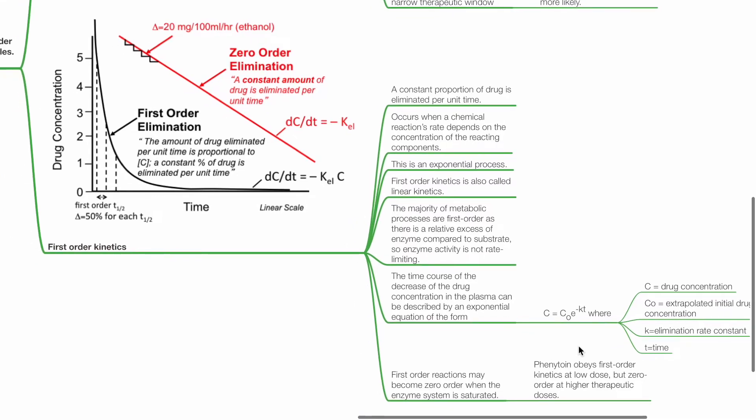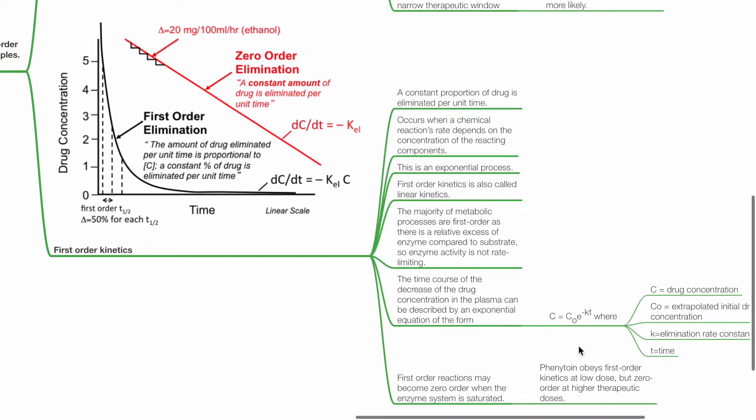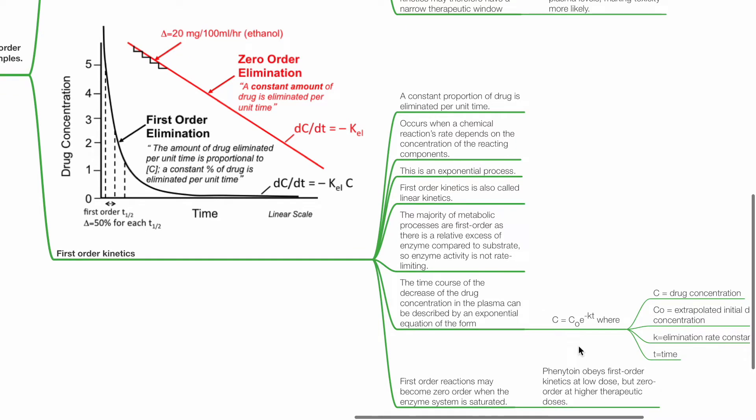First-order reactions may become zero-order when the enzyme system is saturated. For example, phenytoin obeys first-order kinetics at low doses but zero-order kinetics at higher therapeutic doses.